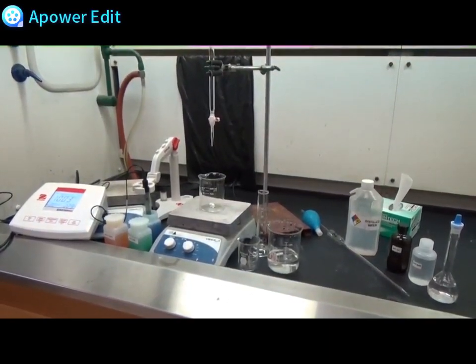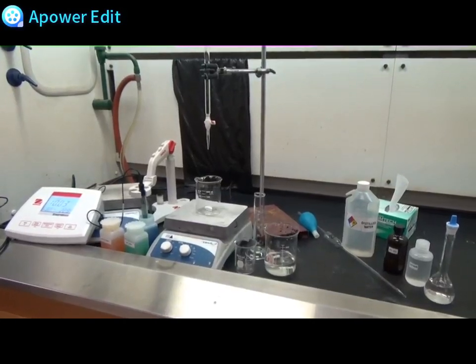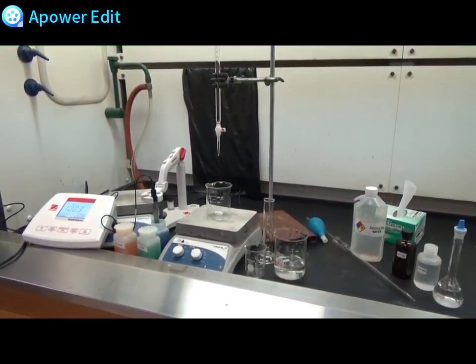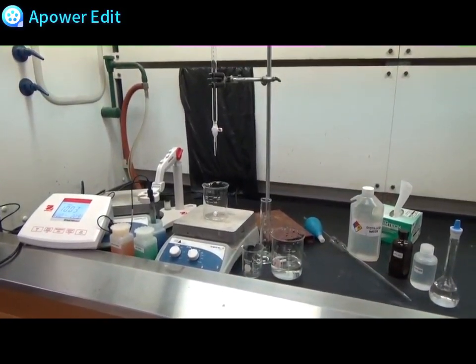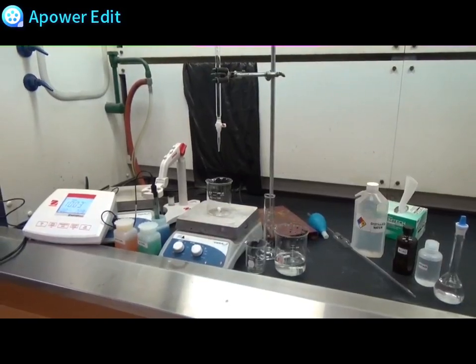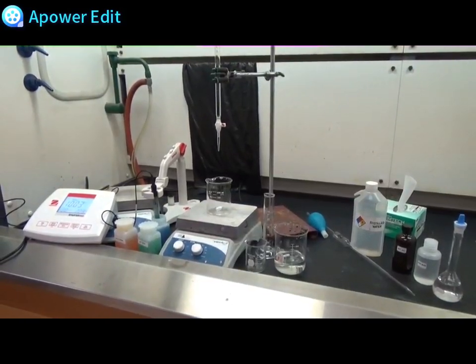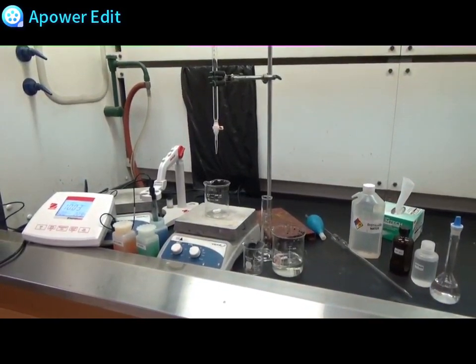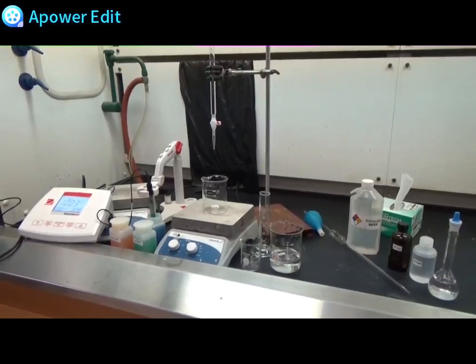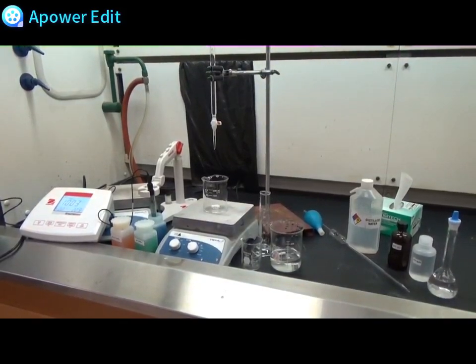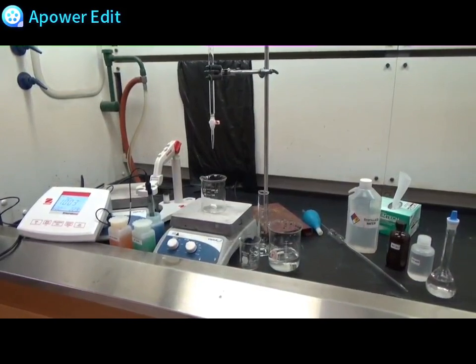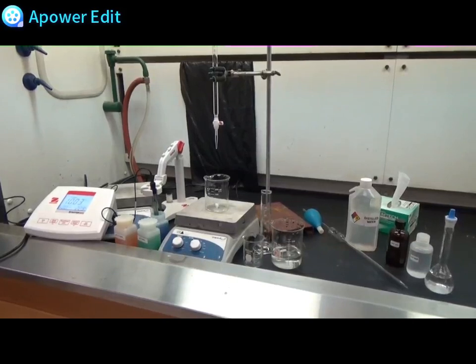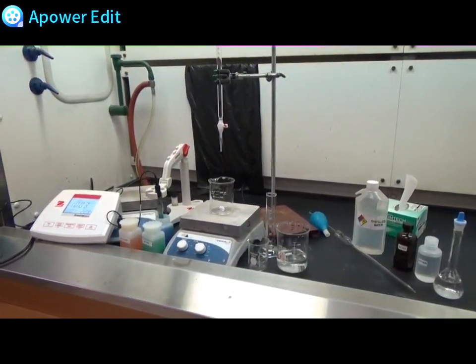Today we'll be titrating 0.5 molar glycine solution. We are not looking for an endpoint today. We will be mapping out the change of pH of the glycine solution as we add base to the solution. We're going to acidify the glycine solution with 6 molar HCl until we reach a very low pH about 1.5, and then we will begin recording points of change of pH as we add base.